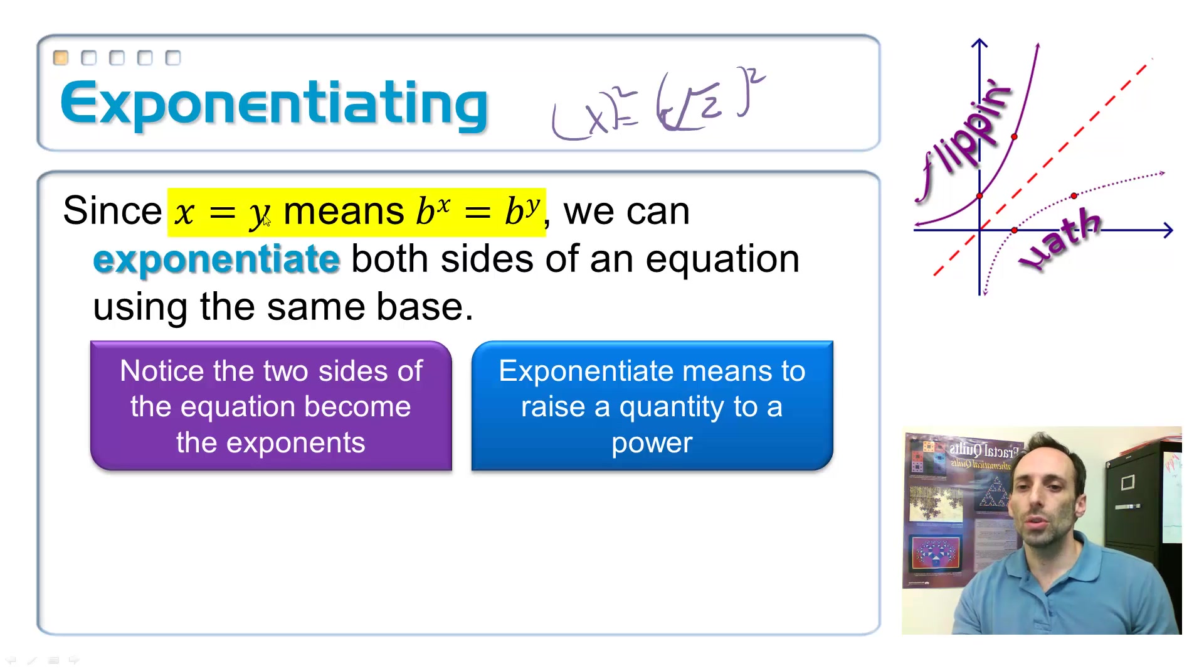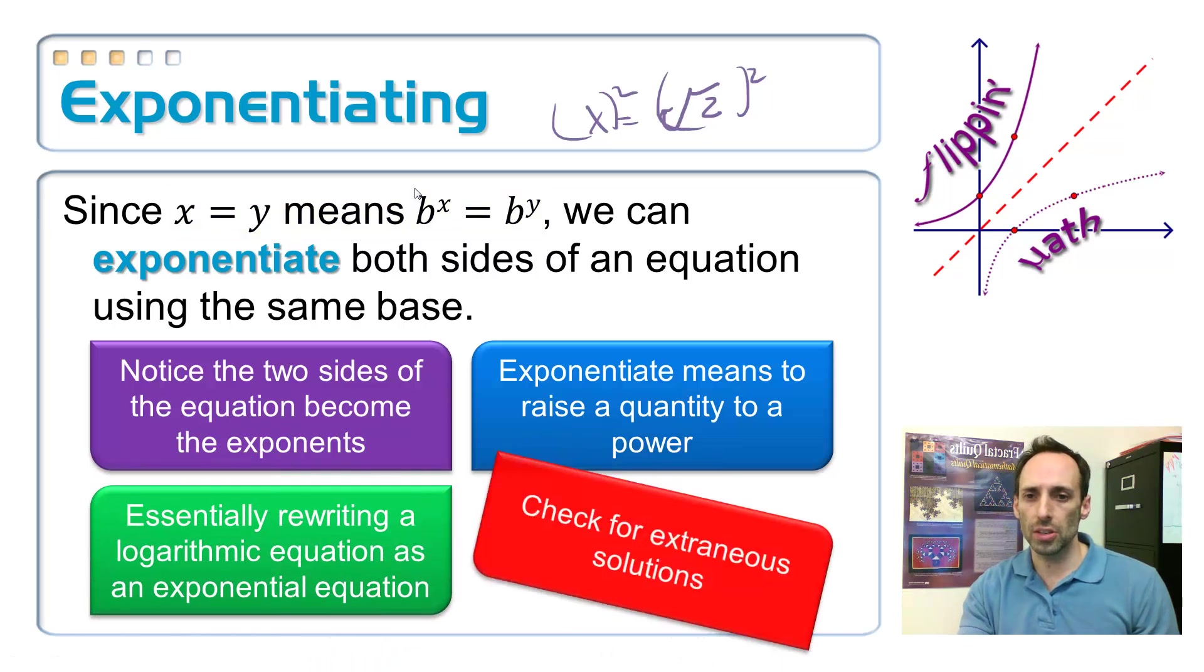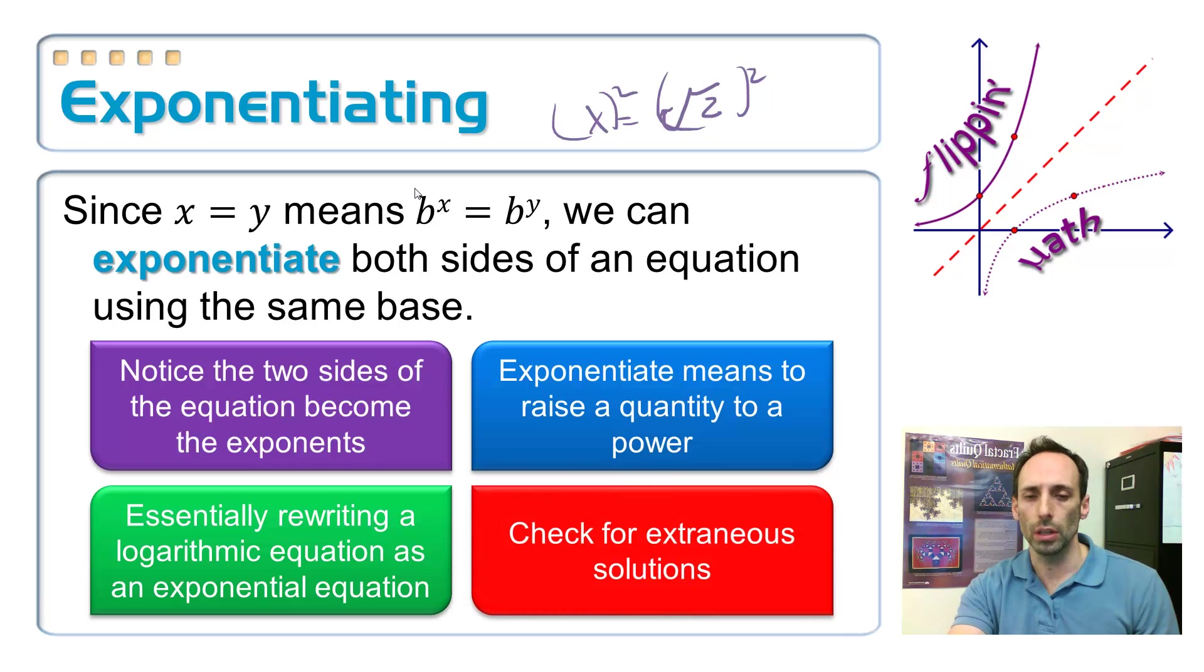Look right up here. x equals y means that b raised to the x has to be equal to b raised to the y, as long as that b is not 1. It doesn't make sense if that b is 1.